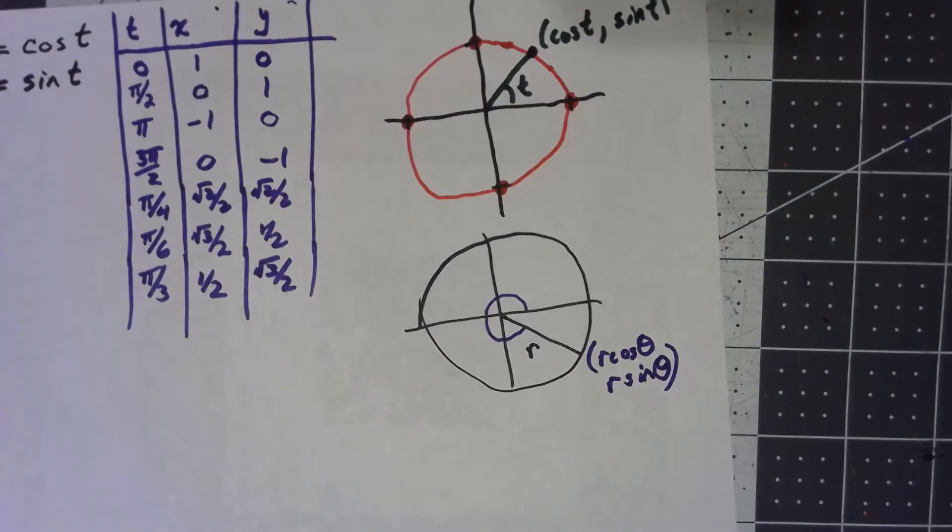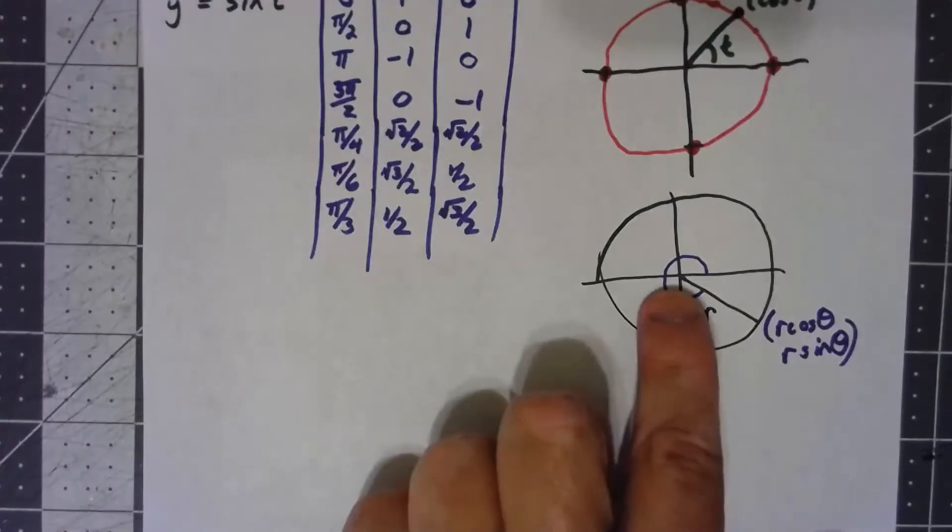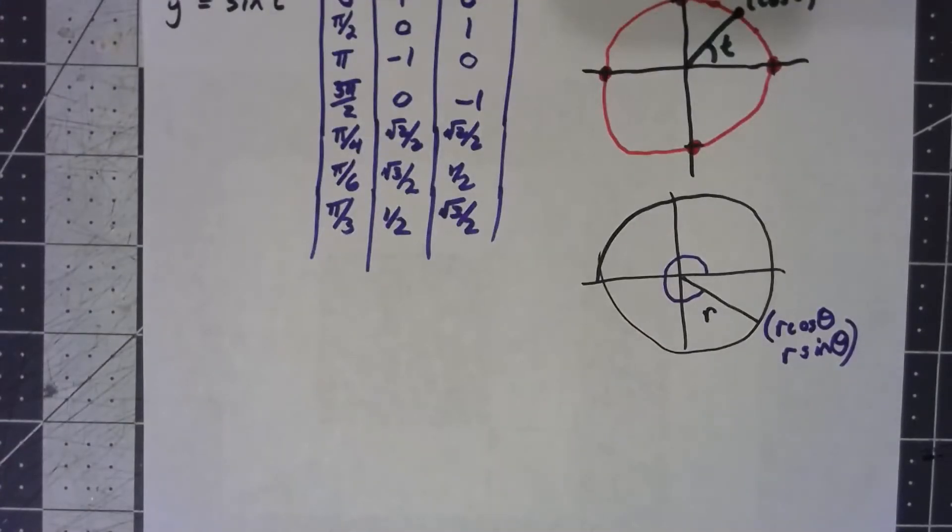We can use this idea, then, to parameterize circles that, well, let's start with just ones that are centered at the origin, though honestly we can use this to parameterize any circle with a little bit of effort.